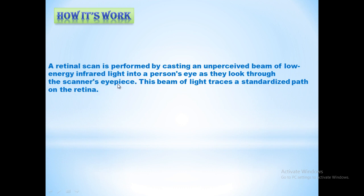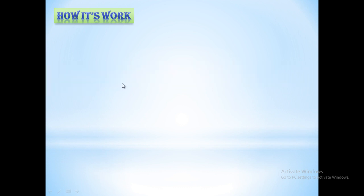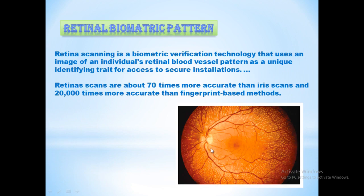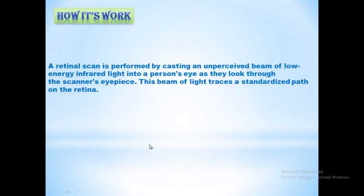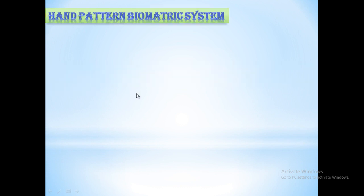Through this process, the scanner's light is directed into our eyes. It captures the image of our retinal tissue, and this is how retinal biometric scanning works. Next is the hand pattern biometric system.